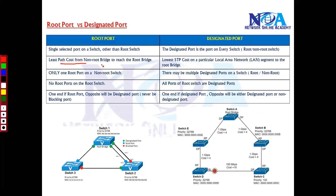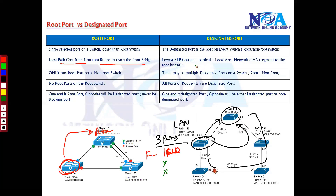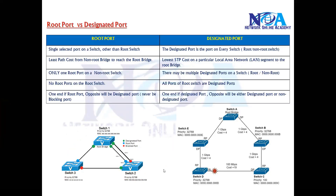The root port is calculated as the least path cost from the non-root bridge to the root bridge — every non-root bridge looks for the best way to reach the root bridge. For the designated port, it is calculated within the LAN — how many paths exist in the LAN to reach the root bridge. It will decide one port for forwarding and the remaining will be in the blocking state based on least cost.